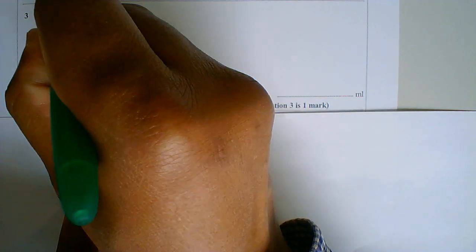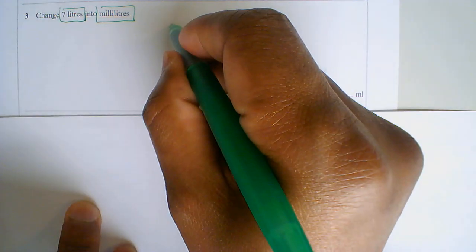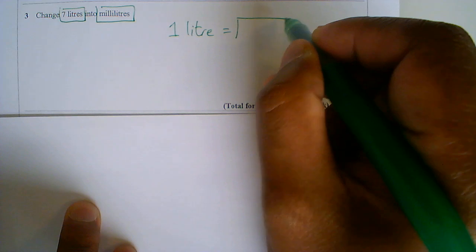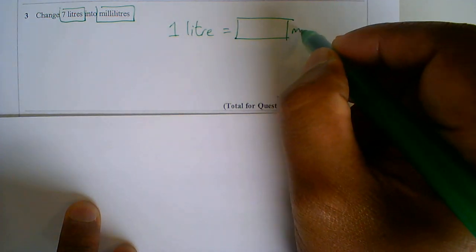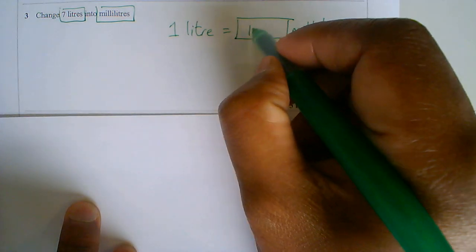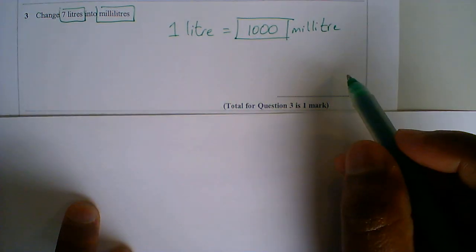So I've got litres and millilitres. So I have to remember 1 litre equals how many millilitres? 1 litre is 1000 millilitres.